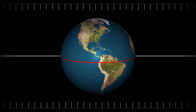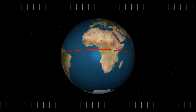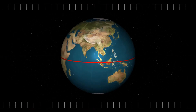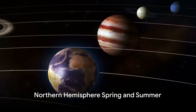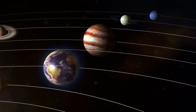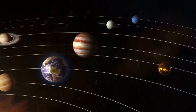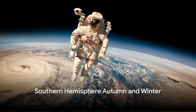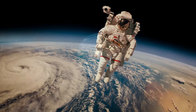Different parts of the world receive varying sunlight due to the Earth's 23.4 degree axial tilt concerning its orbital plane. In the Northern Hemisphere's spring and summer, the hemisphere is tilted towards the Sun, resulting in longer daylight hours. Meanwhile, the Southern Hemisphere experiences shorter days, marking autumn and winter.